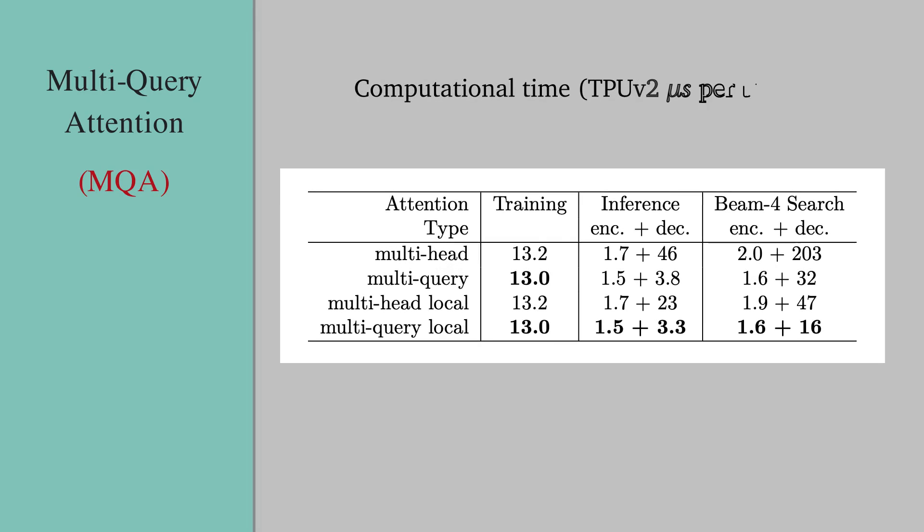Now how is the performance of MQA compared to MHA? Our first criteria is the computational time. Here in this table we are looking at the TPU v2 time per token in microseconds. As we can see in this table, MQA is able to achieve significant speedup, reducing the time from 203 microseconds to 32 microseconds.